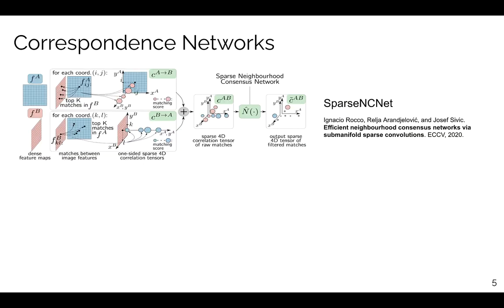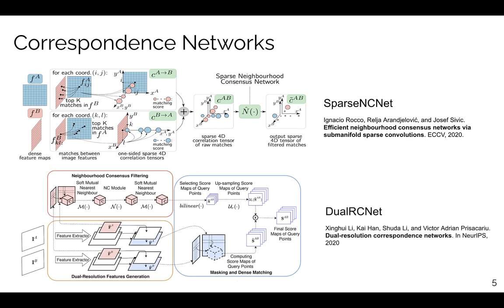In order to match higher resolution feature maps, SparseNCNet uses the Sparse 4D correlation volume. Our concurrent work, DualRCNet, first obtains cross-matches with low resolution features and then rematches for promising candidates at a higher resolution.